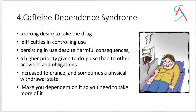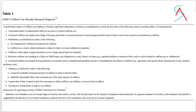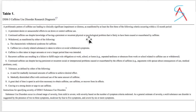Caffeine can result in a dependent syndrome, which has three main important features: persistent desire or unsuccessful effort to cut down or control caffeine use; continued caffeine use despite knowledge of a persistent or recurrent physical or psychological problem caused or aggravated by caffeine; or withdrawal symptoms.